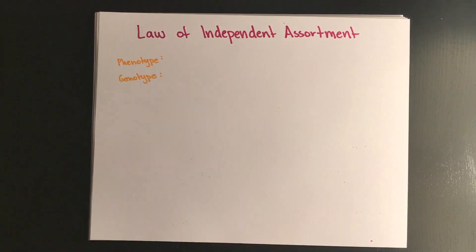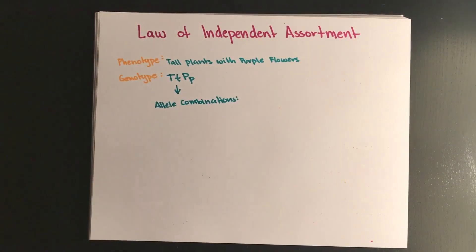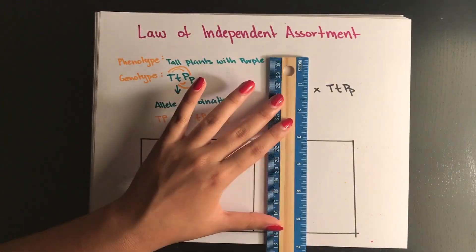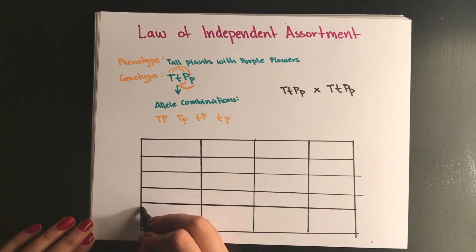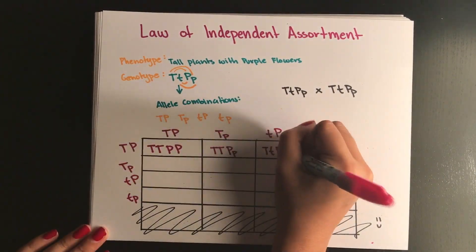A dihybrid cross presents a cross between plants with two different characteristics, so instead of only looking at height or only looking at color you do both together. Two double heterozygous phenotypes will create a 9 to 3 to 3 to 1 ratio.